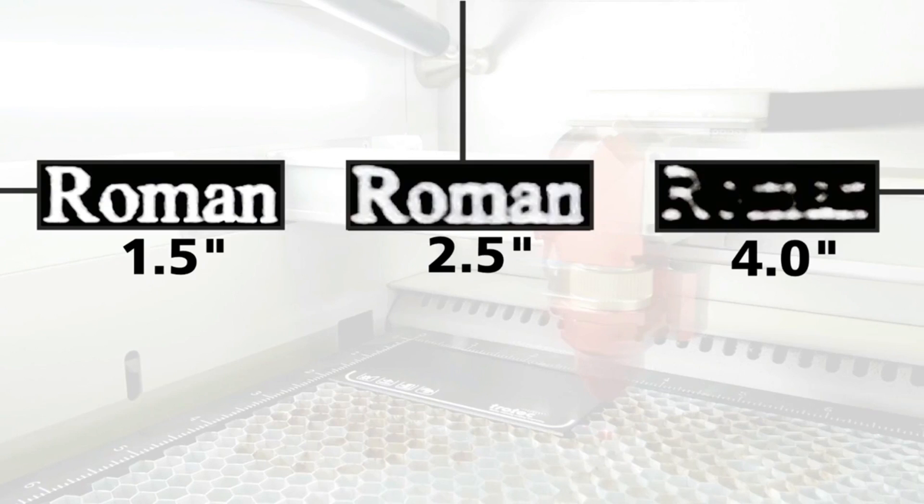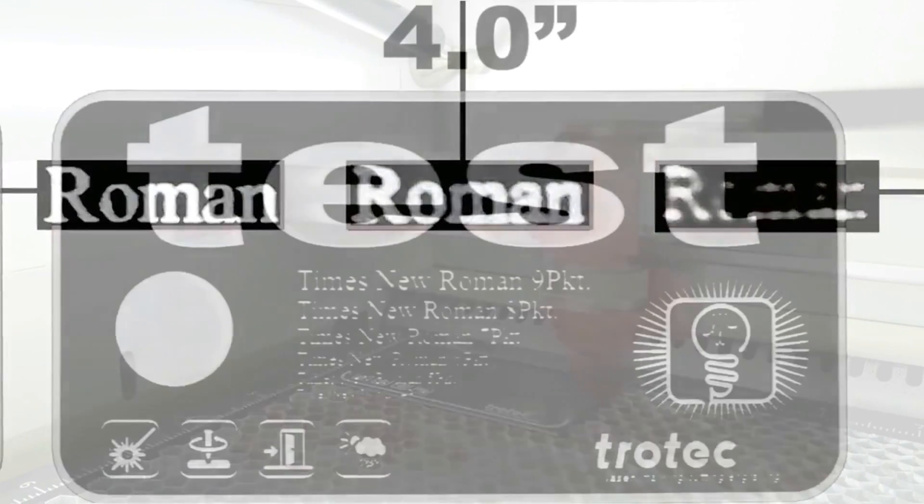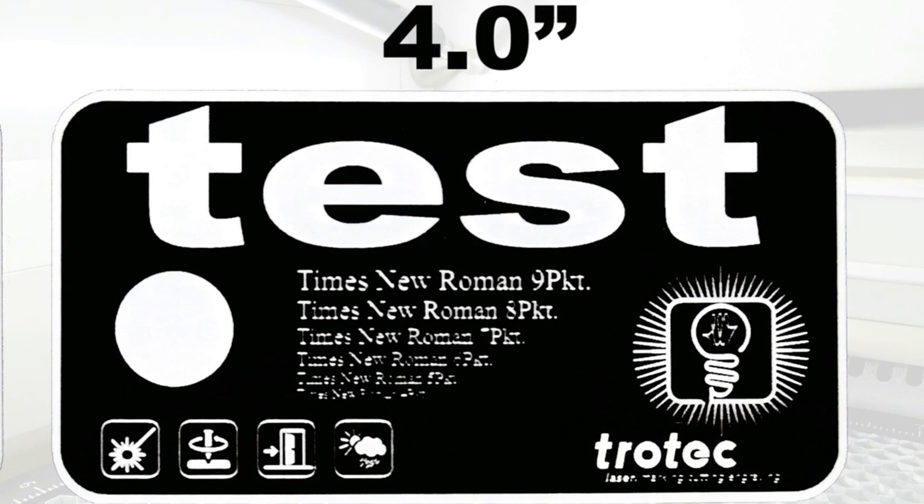This is because the spot size is larger on the 4-inch lens than on the 1.5-inch lens. If we would increase the power using the 4-inch lens, it would look bold and not very clear in the smaller details. The reason why we have these results is because we're losing energy, or it's less intensity, since the spot size is larger here than on the 1.5-inch lens.